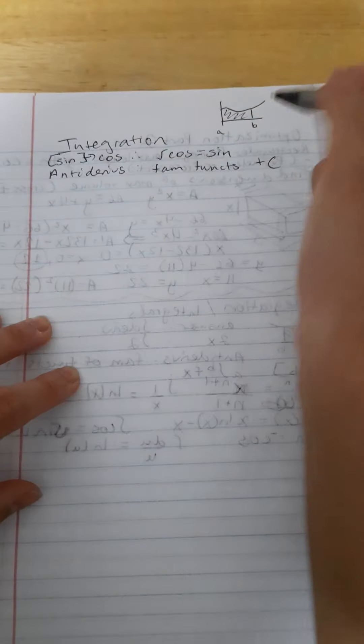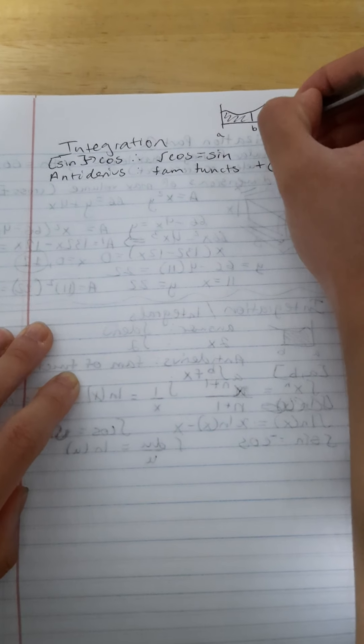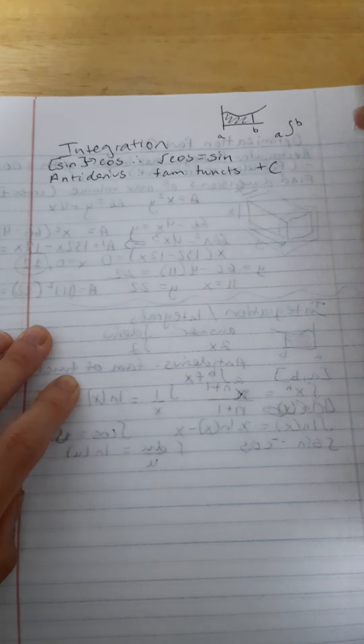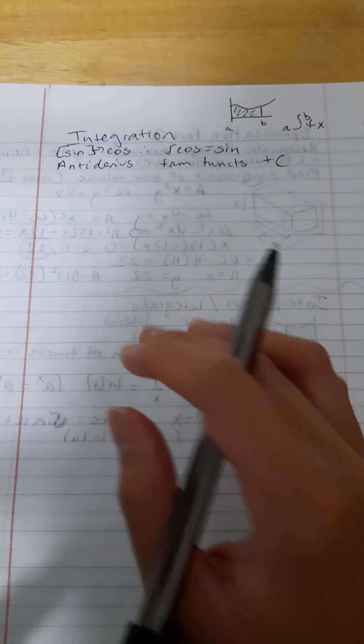Therefore, you need to add plus c at the end when you're doing these. Okay, with definite integrals, that's when we have something like this. You would write them as a to b, and then whatever your function is.